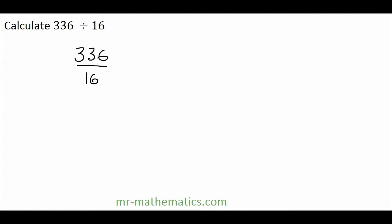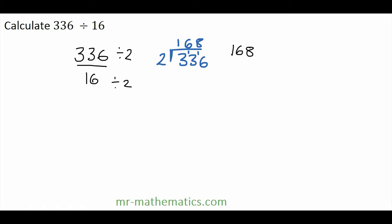Now 2 goes into both, and we're trying to make the denominator a single digit in its units. So 336 divided by 2 — we can use the short method of division for this. 2s into 3 go once, with 1 left over. 2s into 13 go 6 times, and 2s into 16 go 8 times. So now we're going to simplify this fraction. 168 divided by 16 divided by 2 is 8.